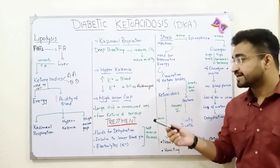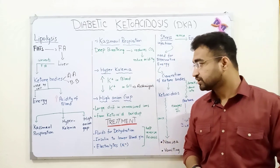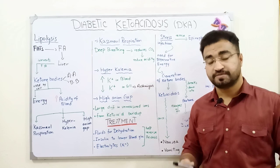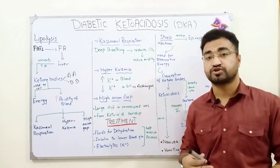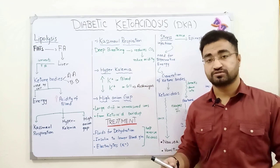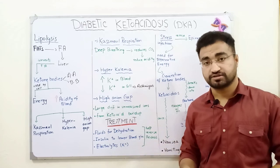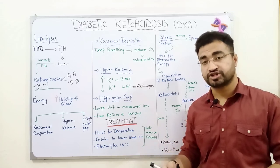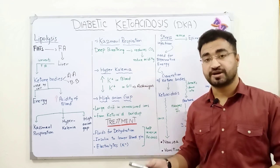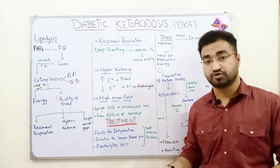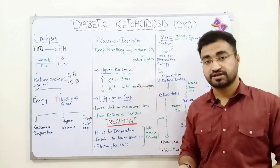Regarding diagnosis: first, blood potassium levels in the patient are checked. If potassium levels are elevated, there is a chance of diabetic ketoacidosis, and the patient is kept under constant observation. Urine analysis can also be performed — if glucose or ketone bodies are found in the urine, that also indicates diabetic ketoacidosis.